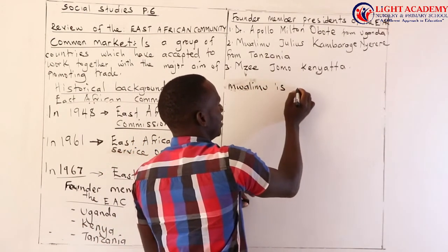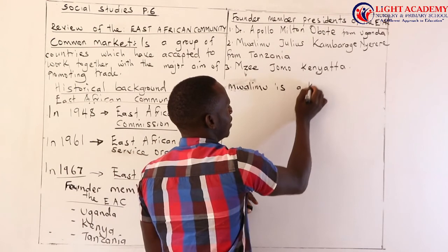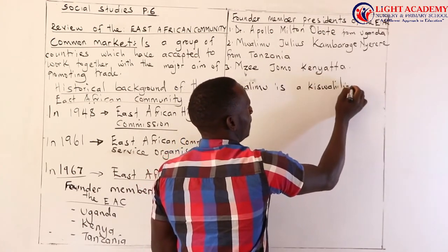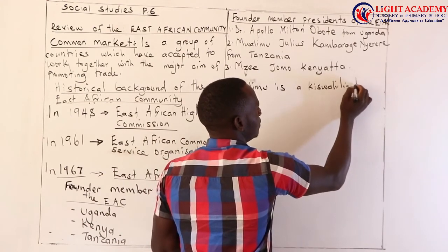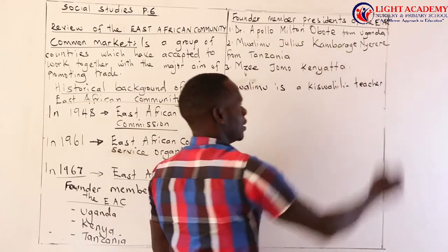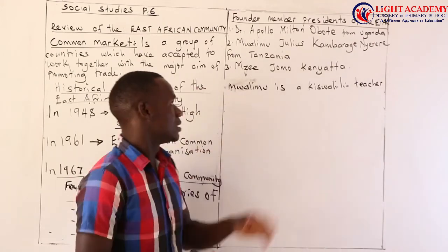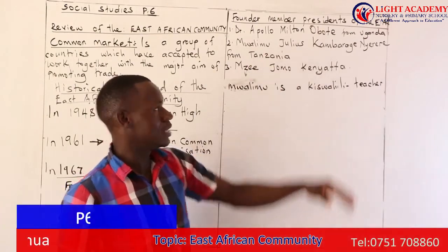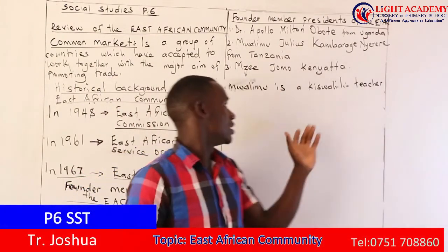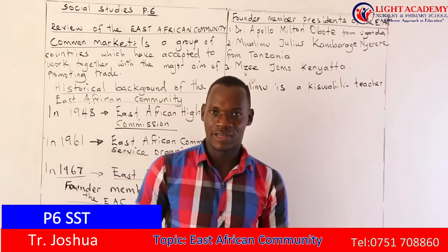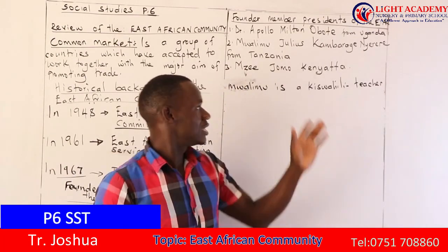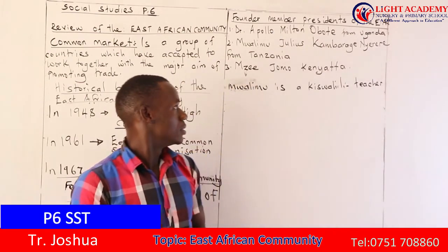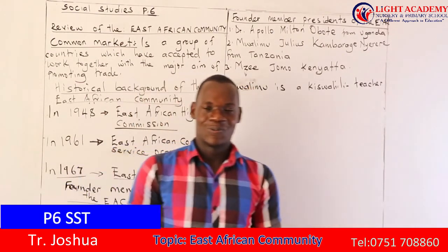Mwalimu is a Swahili word meaning teacher. So he was once a teacher, that's why he carries that title — Mwalimu Julius Kambarage Nyerere. Mzee Jomo Kenyatta of Kenya — his original name was Johnson Kamau. Thank you, my dear viewers.